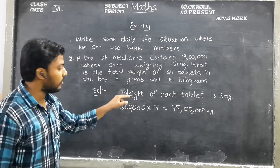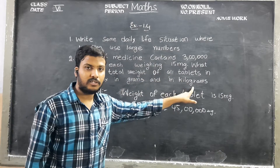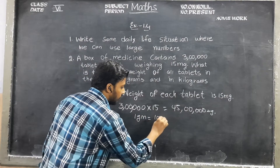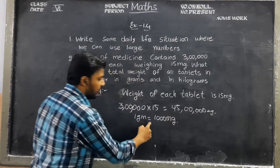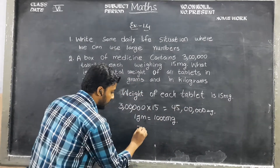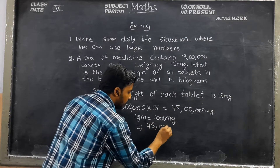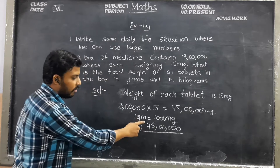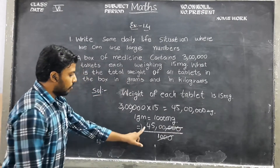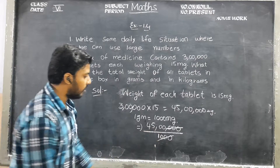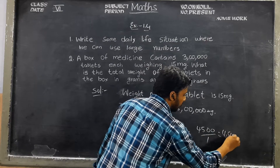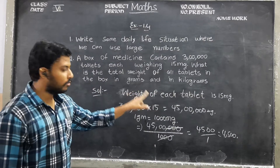Then what did they say? They said to find the weight in grams and kilograms. One gram equals 1,000 milligrams. So for 45 lakh mg, to convert into grams: 45 lakh mg divided by 1,000. Cancel three zeros — three zeros are cancelled. The remaining value is 4,500. So you get 4,500 grams.